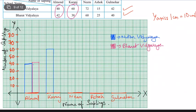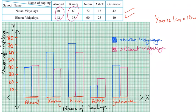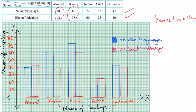For karanj: Bharat's 38 is two below 40, so we draw up till there. Your final answer would look something like this. For neem, Nutan Vidyalay has 72 and Bharat Vidyalay has 60. For ashok, Nutan has 15 and Bharat has 25. For gul mohar, Nutan has 42 and Bharat has 40. This is your final joint bar graph. You can also shade the bars.